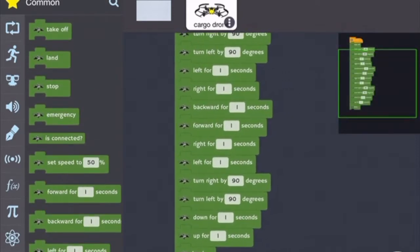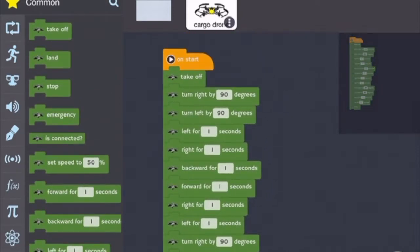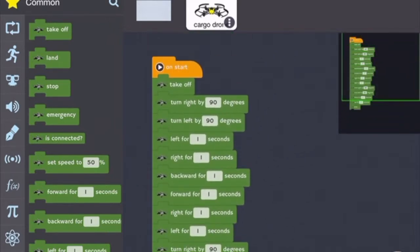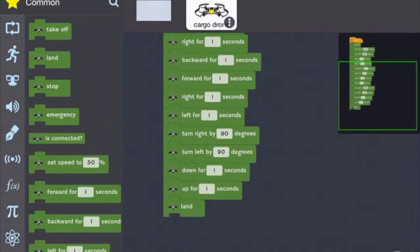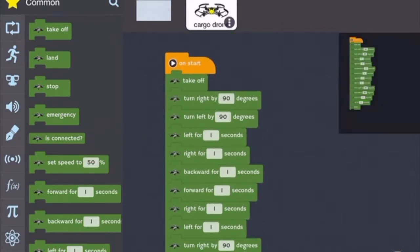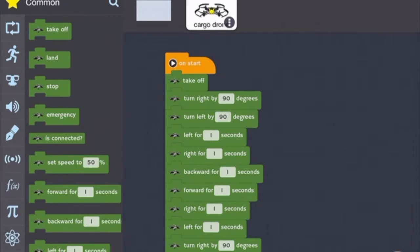All code needs an on start and a take off and then a land. Because if you don't put a take off the drone won't go anywhere. And if you don't put a land it will just hover until you stop the code. And the on start is for this little orange button in the corner. So when you hit it the drone will do whatever you want to do.